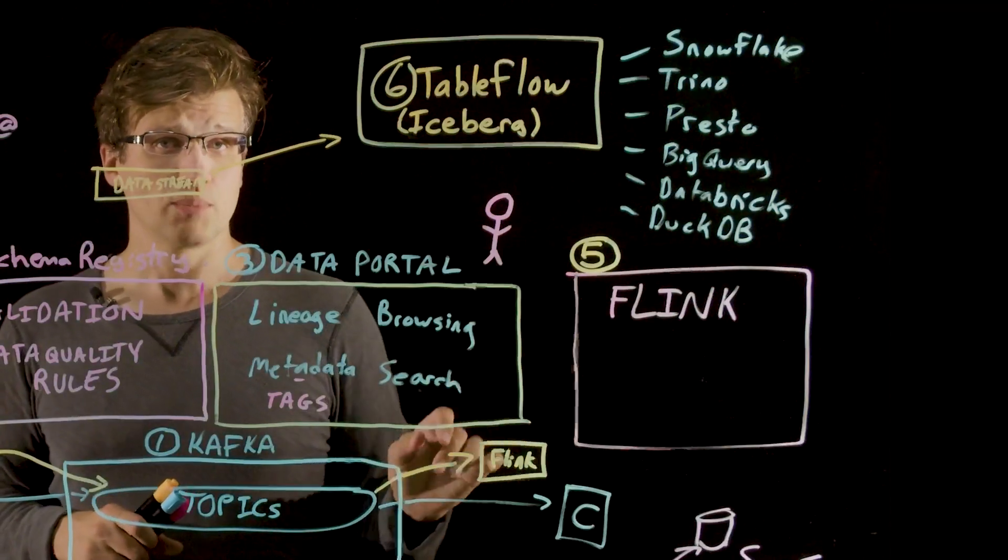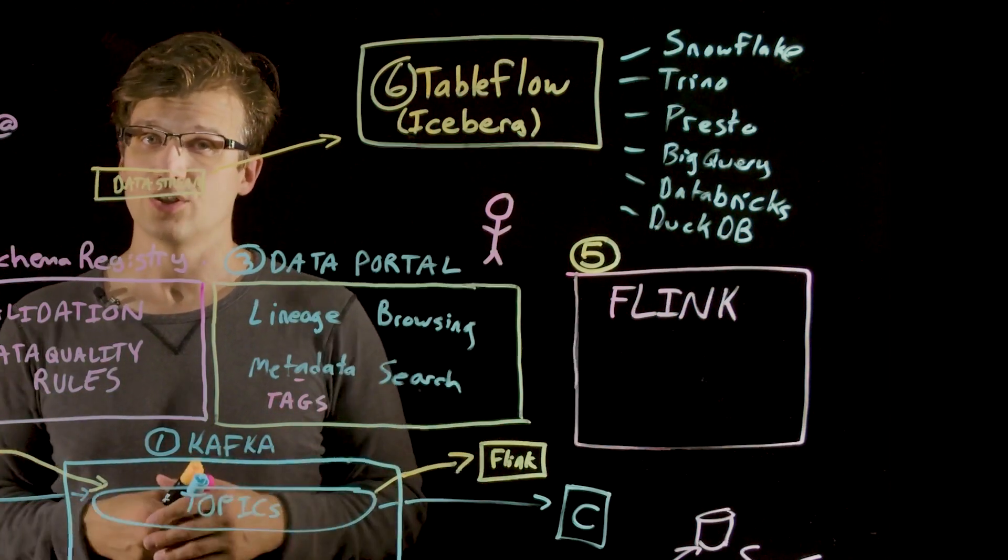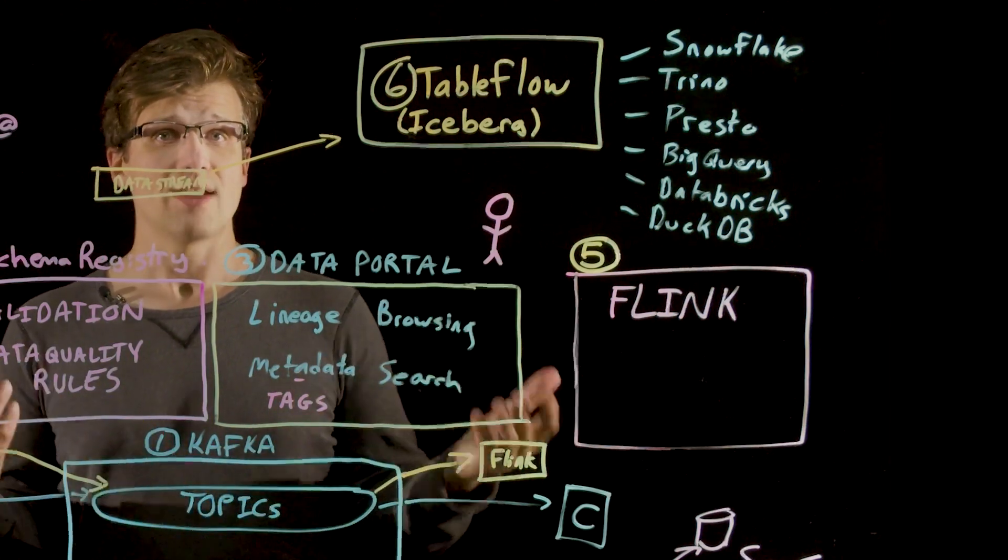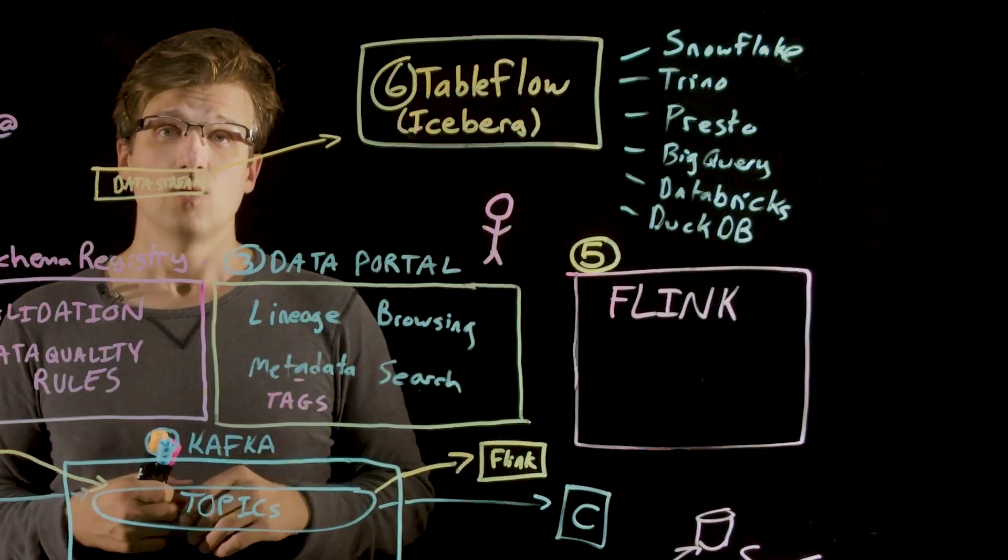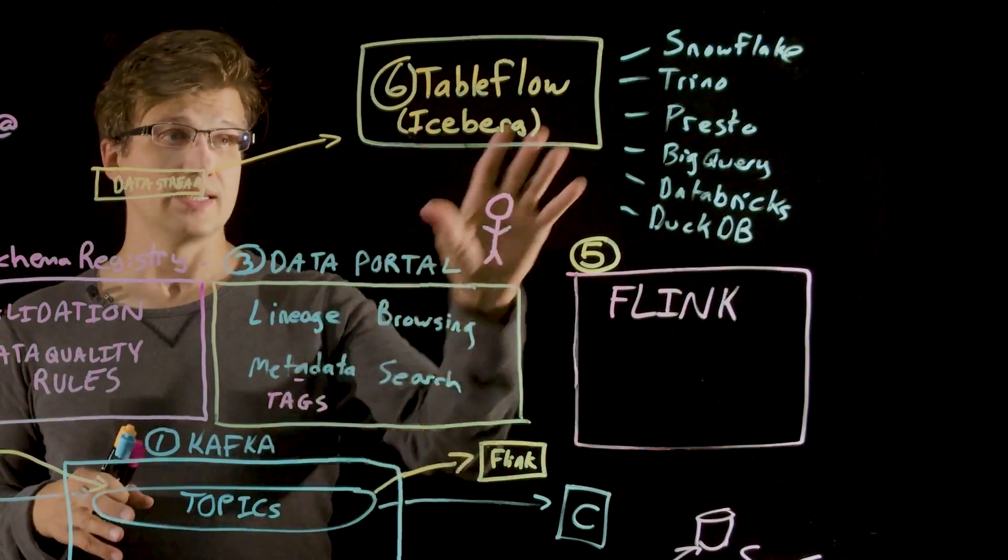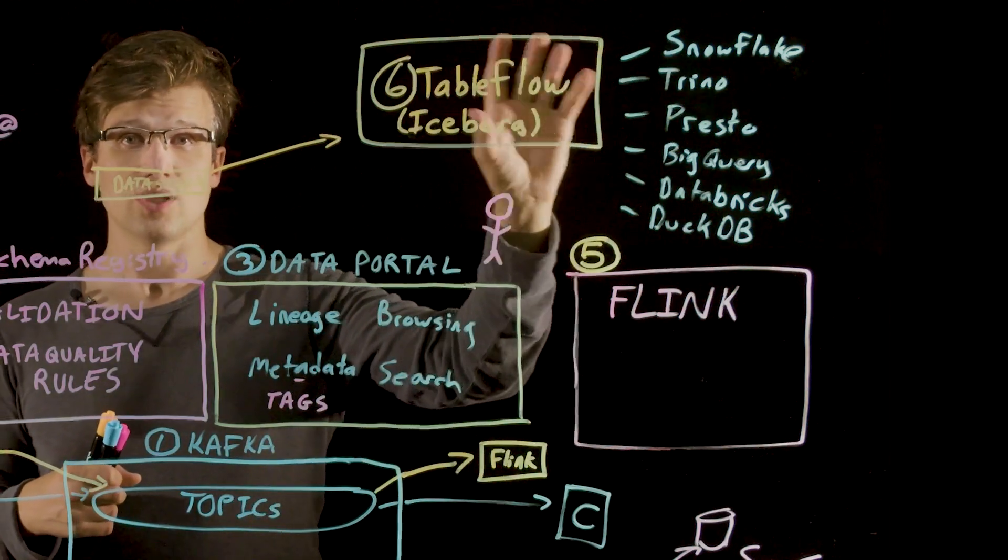Flink provides a general purpose stream processing framework, with many powerful options for transformations and aggregations, as well as driving business logic. And finally, table flow, which easily converts streams into iceberg tables, such that you can query it with the processing engines of your choice.